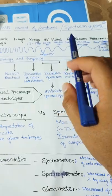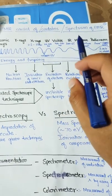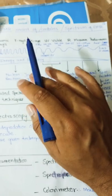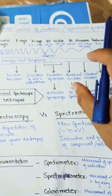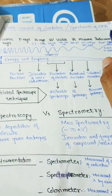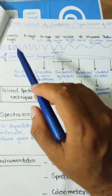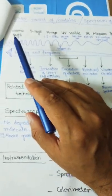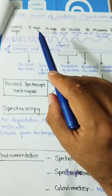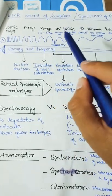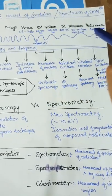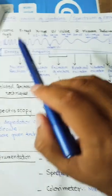Electromagnetic radiation consists of a spectrum of different regions of light having different wavelengths — we call it the electromagnetic spectrum. Different types of radiation present in the electromagnetic spectrum include cosmic rays, gamma rays, x-rays, UV, visible, infrared, microwave, radio waves, and radar waves.